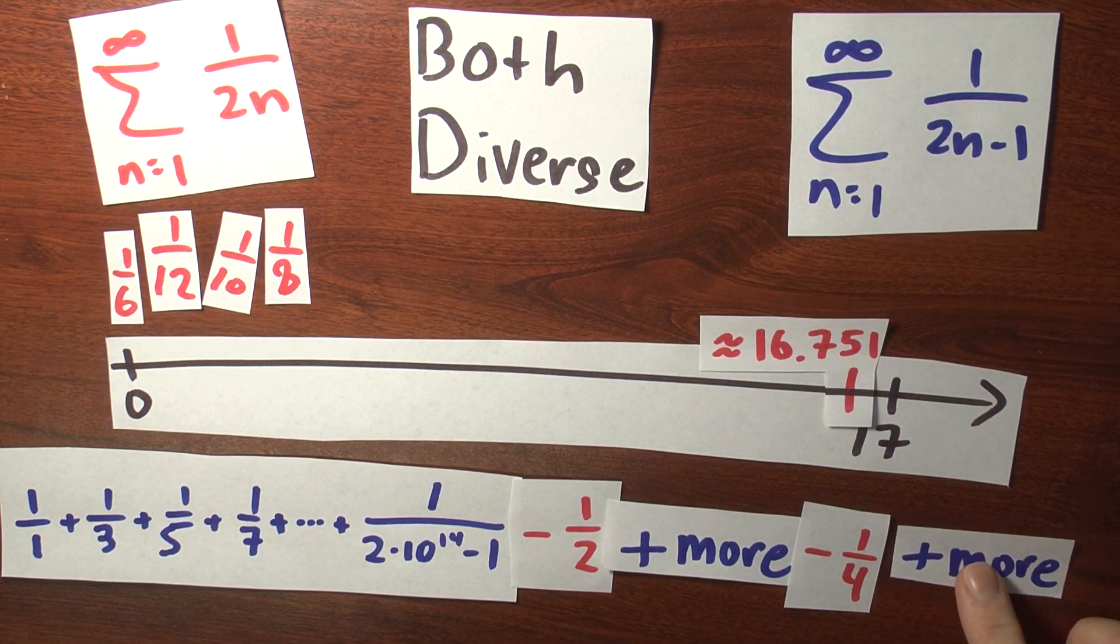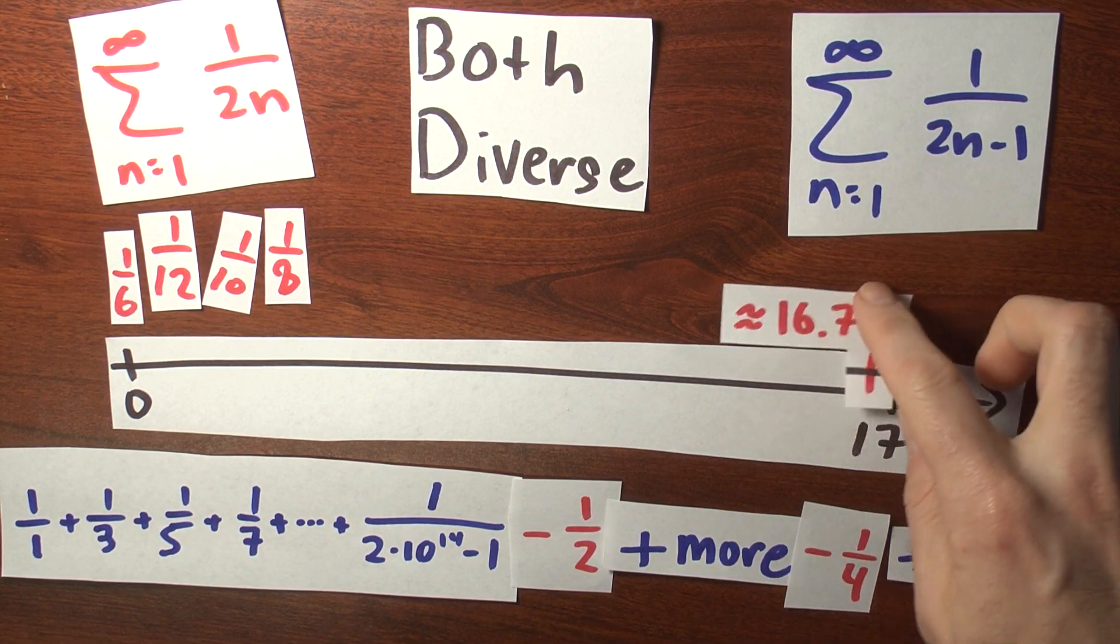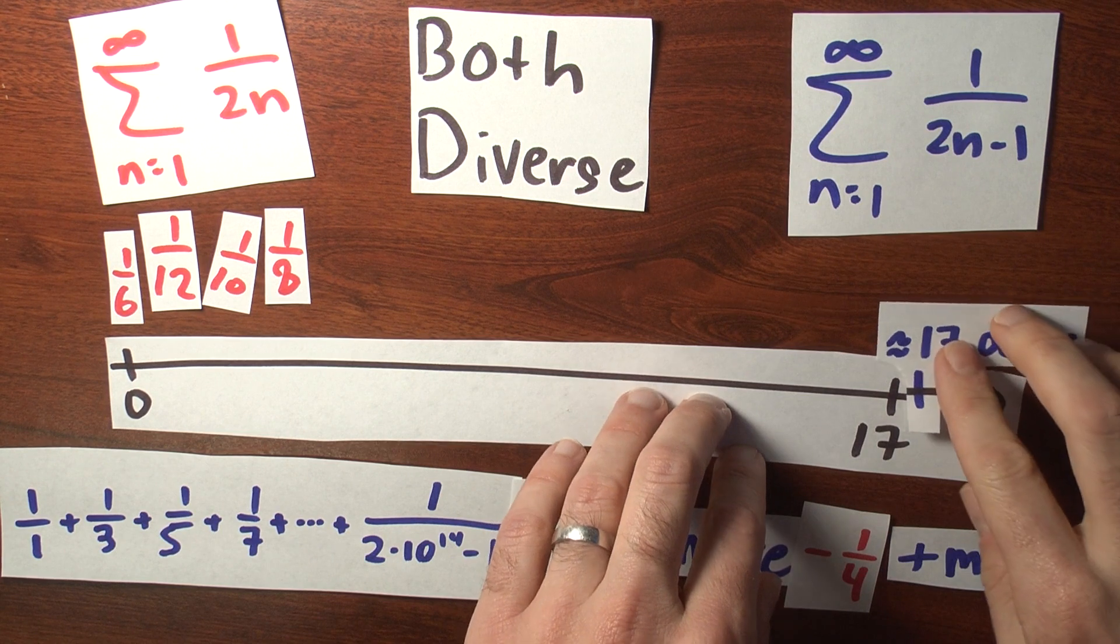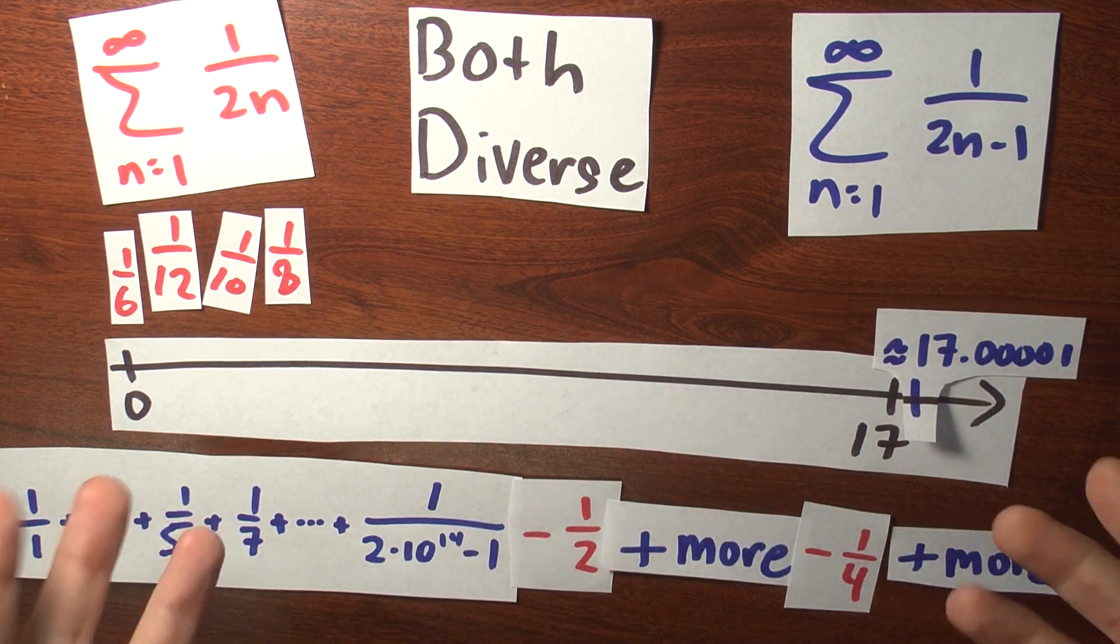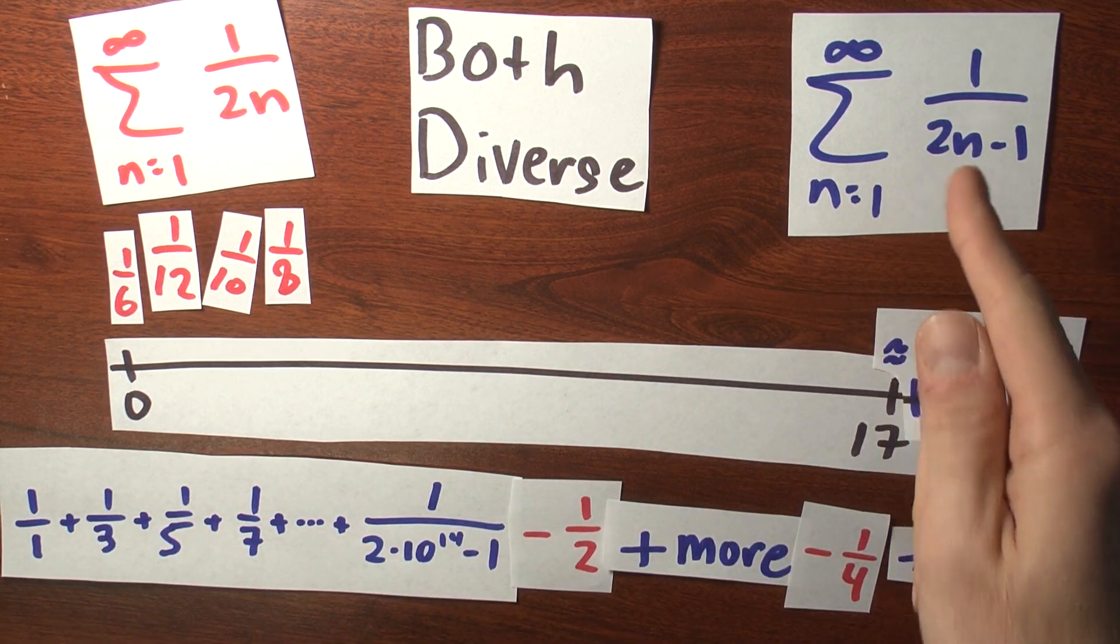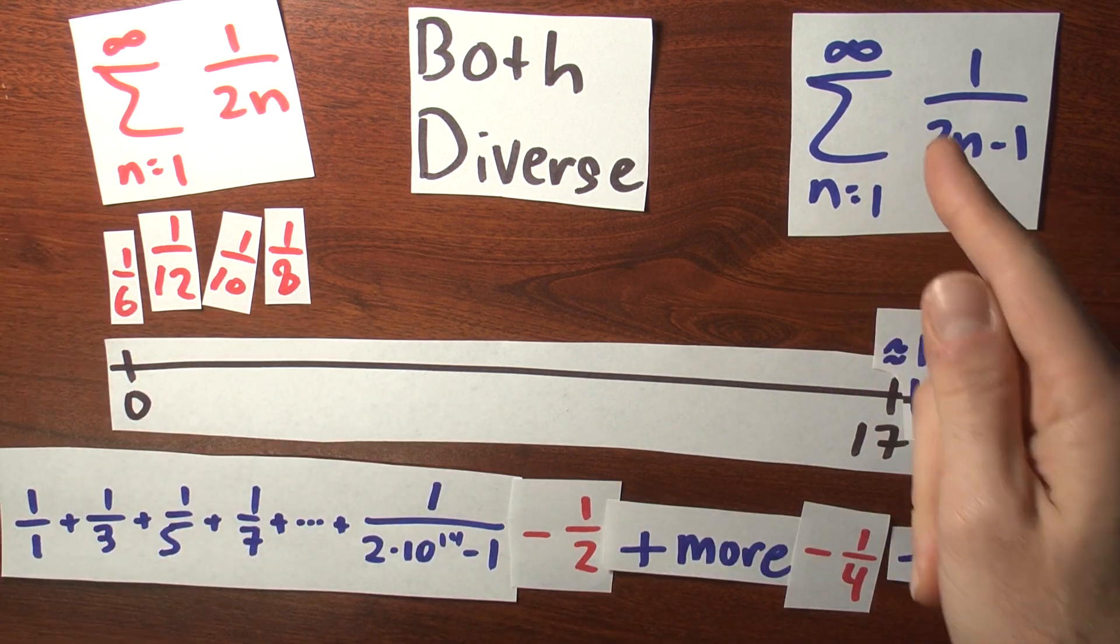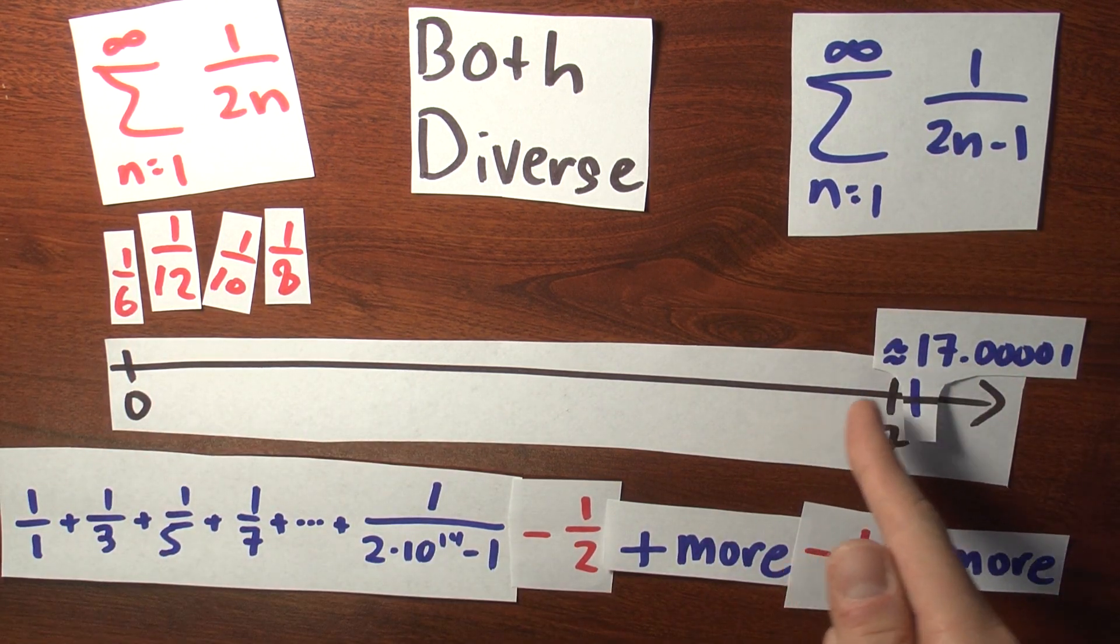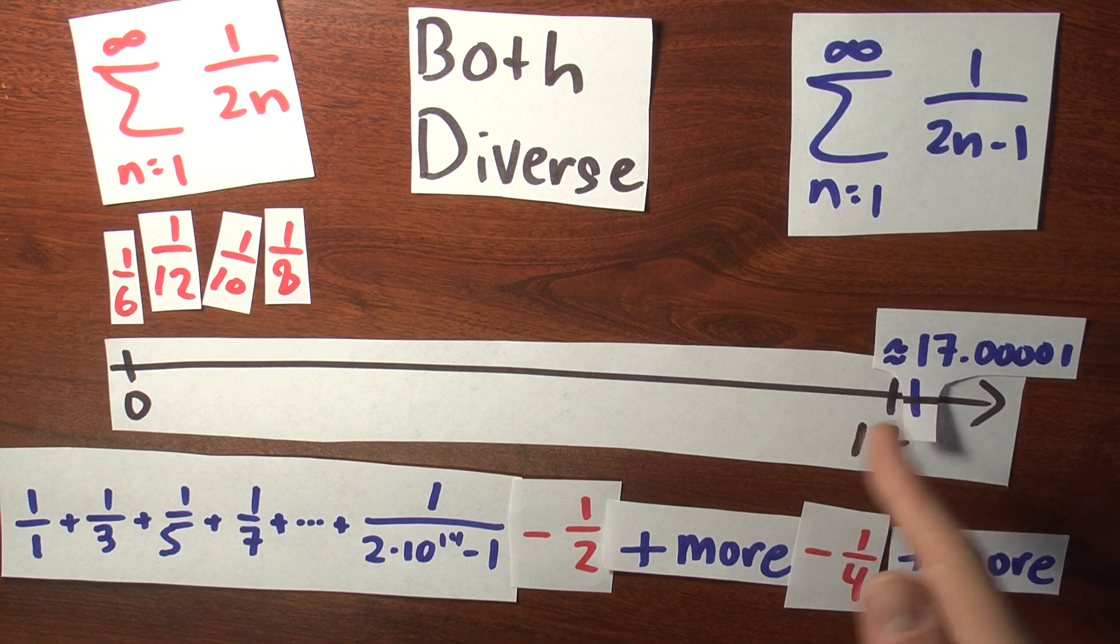And I'll just keep on doing this. I can add more positive terms again. And move myself back to the other side of 17. And I'm never going to run out. All right, because this pile of numbers is infinite. I mean, this series diverges.